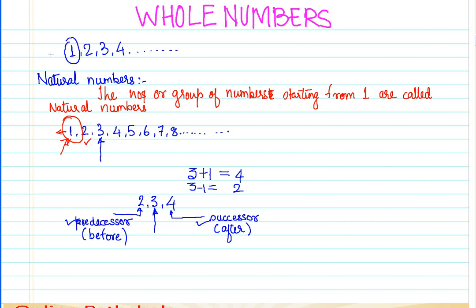I am representing this by dots, which simply implies that these numbers keep on increasing — it's a concept of a huge amount of numbers. Now think about it: would it be possible to find the largest possible natural number? Let's say I have a huge number with thousands of digits — would it be possible to find a successor for it? The answer is yes, because we can simply add one to that huge number and still get a number which is greater.